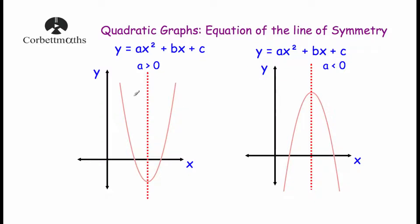The line of symmetry will be a vertical line passing straight through the middle of the parabola, something like this dotted line here. That line is vertical so its equation would be x equals something. Because it passes through the middle of the parabola, all we need to know is where it crosses the x-axis. So for instance if it passed through the point 8 on the x-axis, the equation of the line of symmetry would be x equals 8.